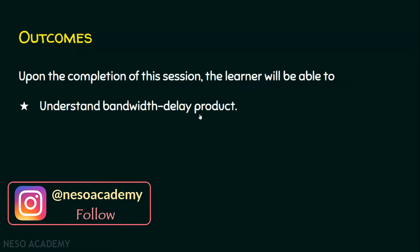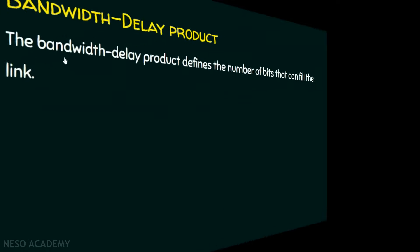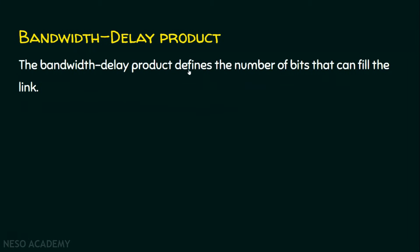Let's start with what is bandwidth delay product. The bandwidth delay product defines the number of bits that can fill the link. Suppose if we have a link, how many number of bits can fill the link? That is defined by the bandwidth delay product. In other words, it is the capacity of the link.